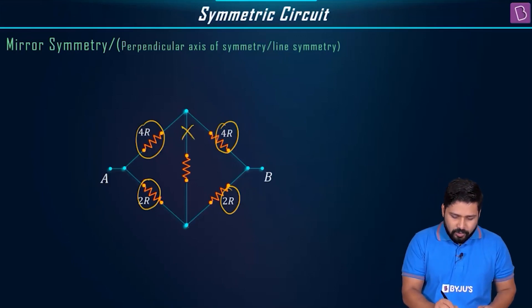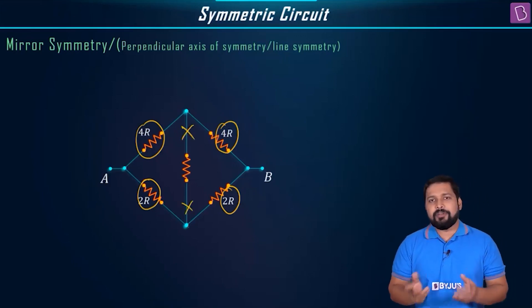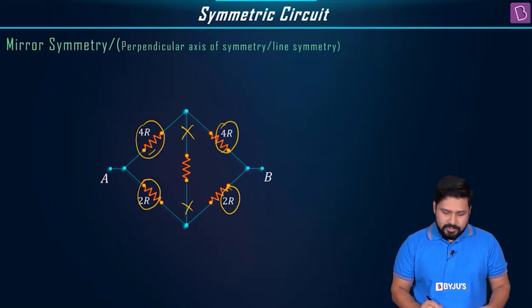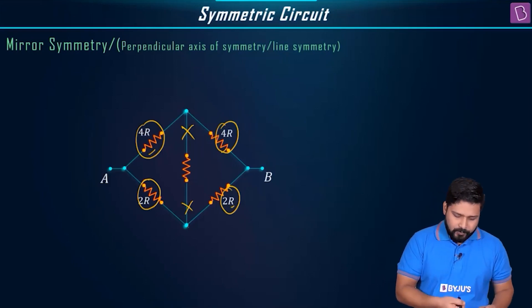So if this is a balanced Wheatstone bridge, obviously this resistance will have nothing to do. You have got 4R and 4R which are in series, 2R and 2R which are in series, and then together they are in parallel. We know this by Wheatstone bridge.